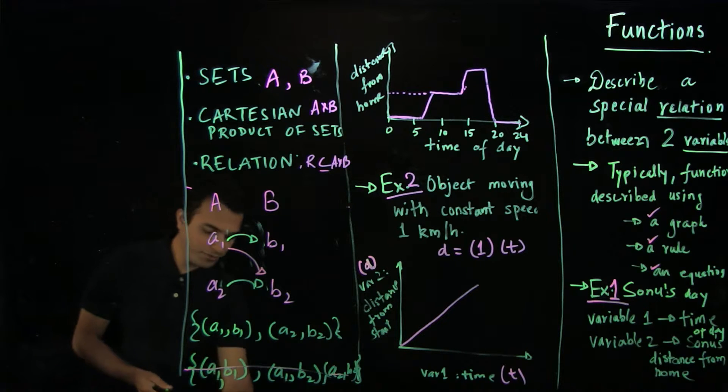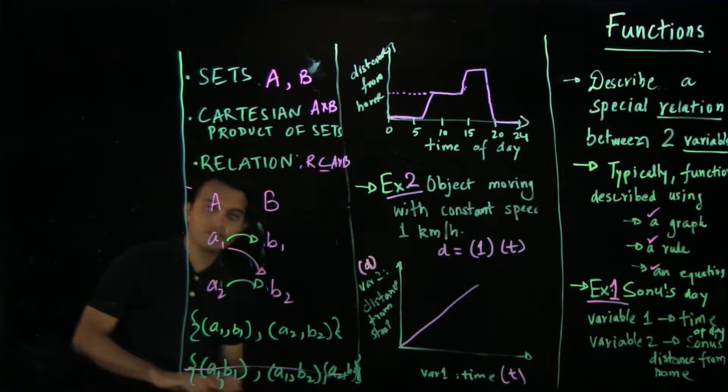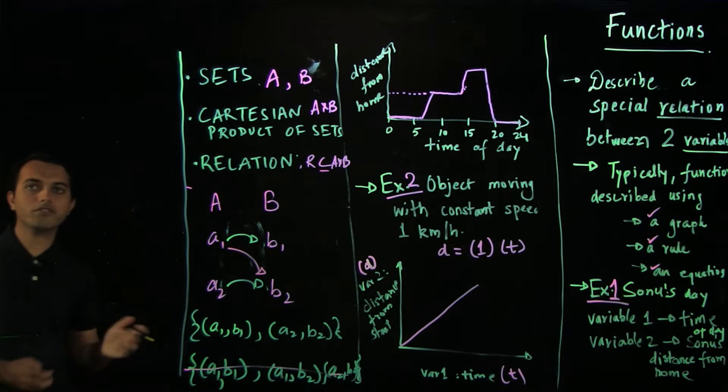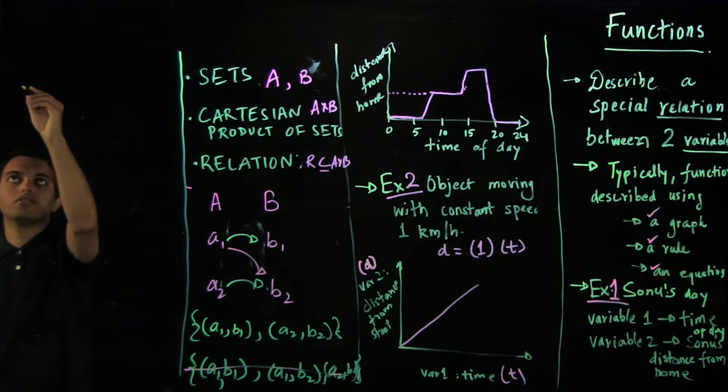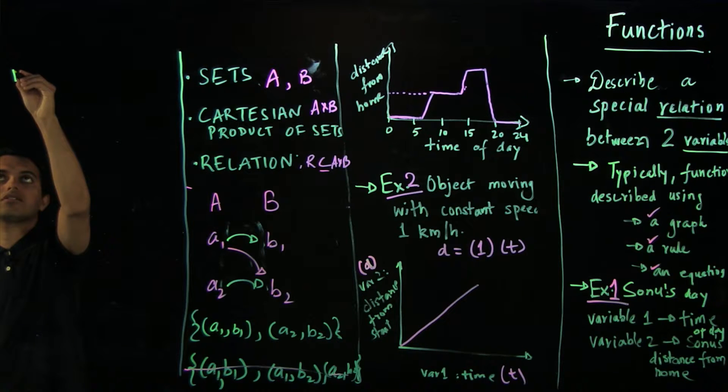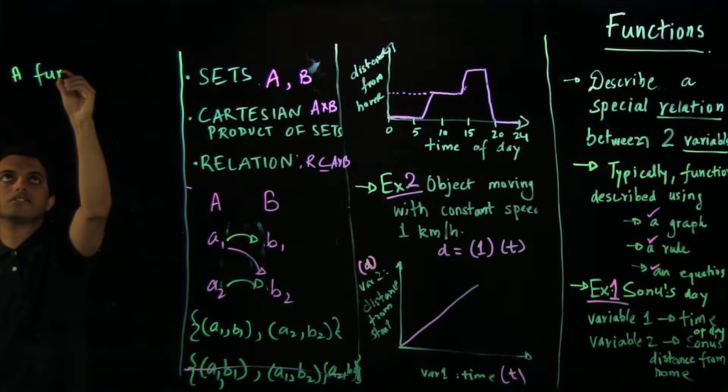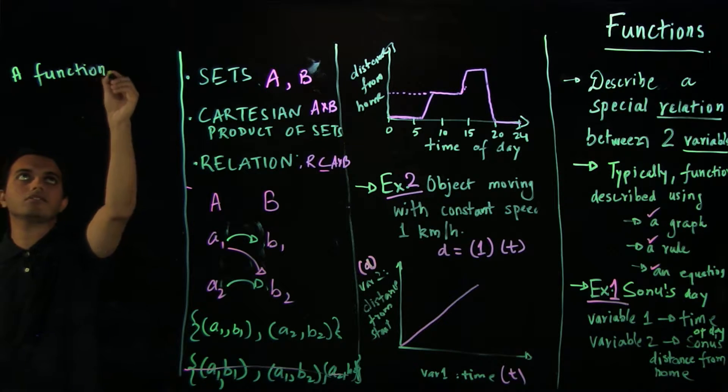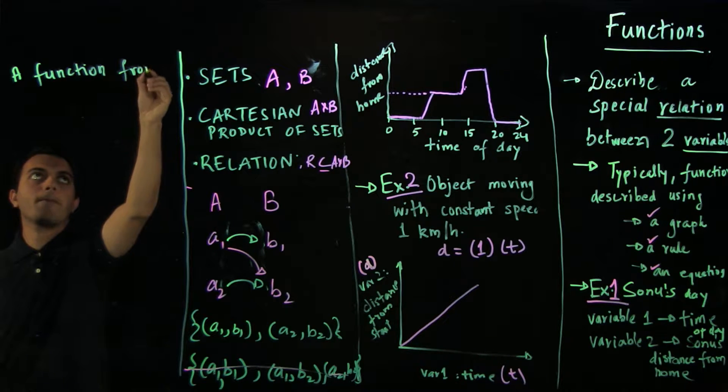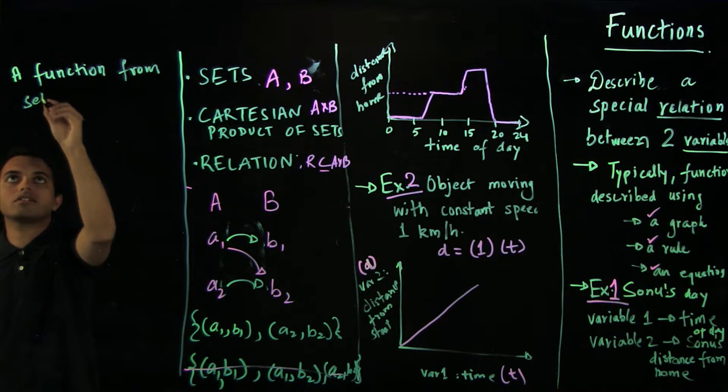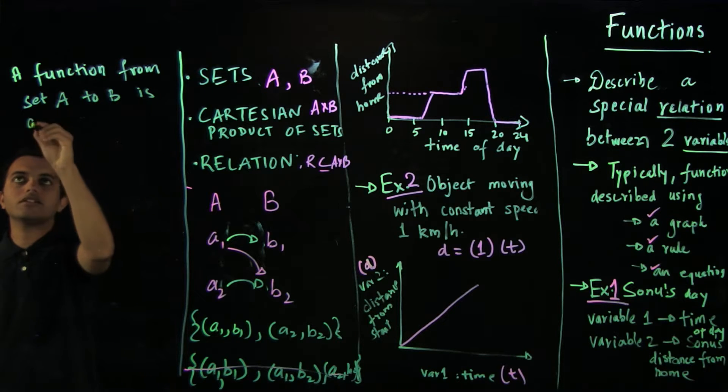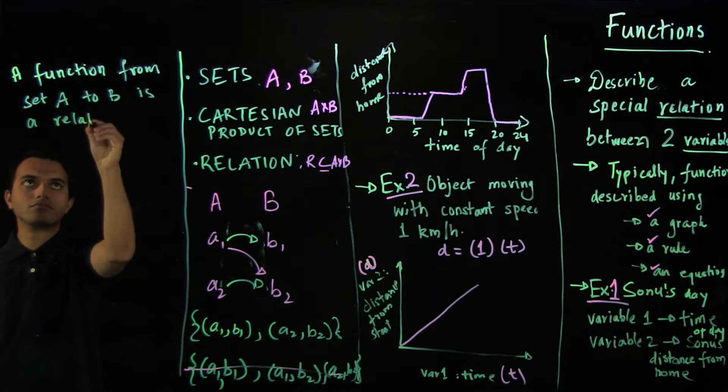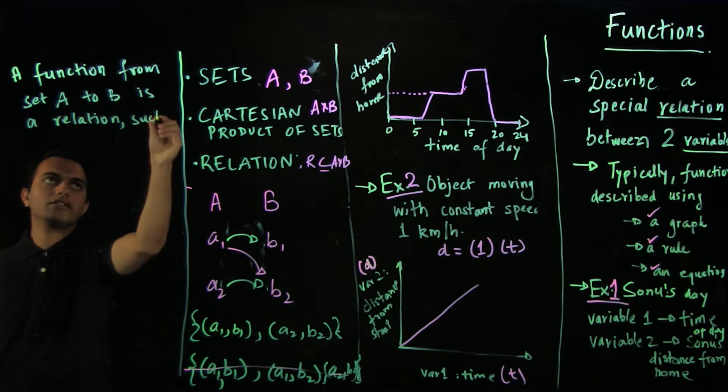So mathematically, if you write, a function has to satisfy, along with being a relation, it has to satisfy two properties. The first is, a function is a relation, a function from set A to B is a relation such that,